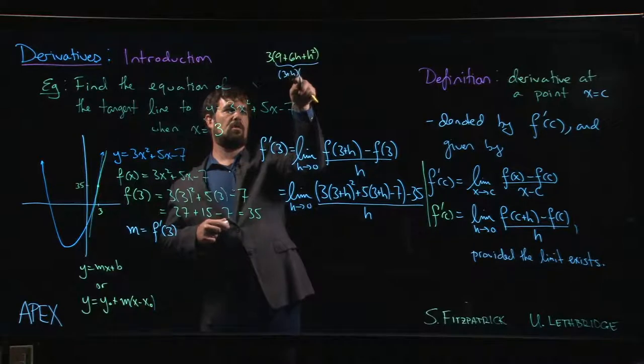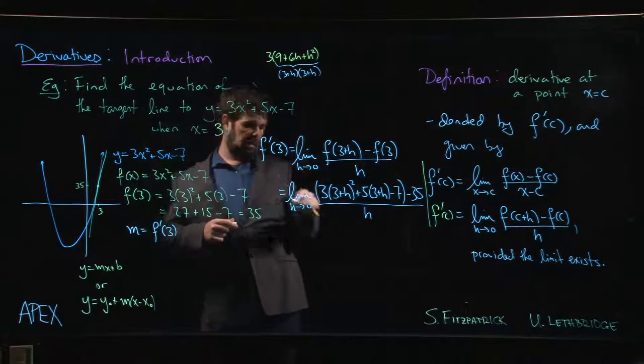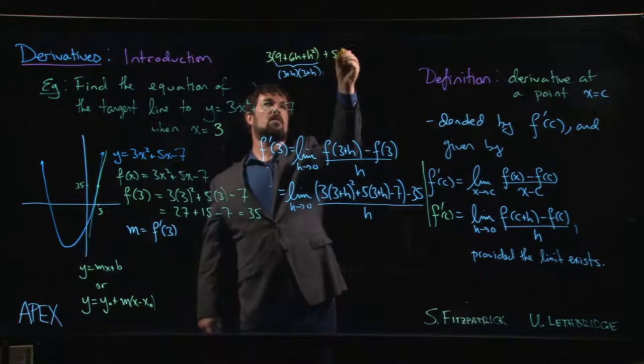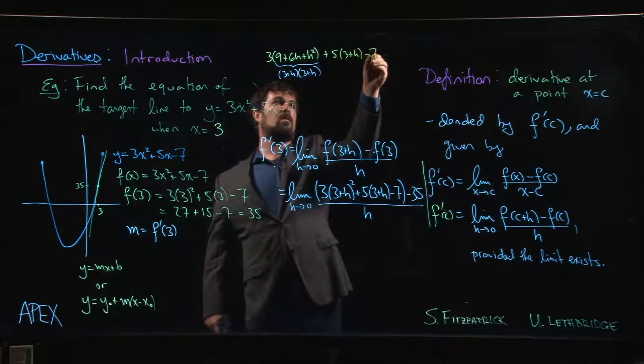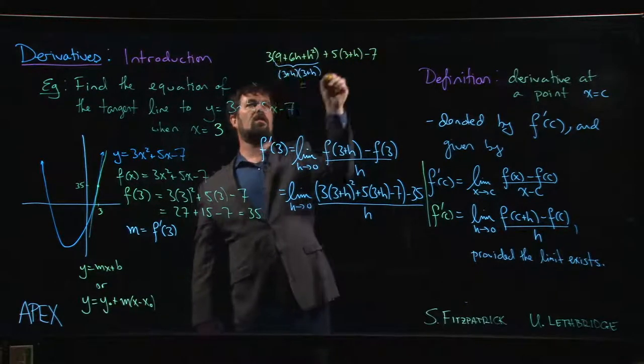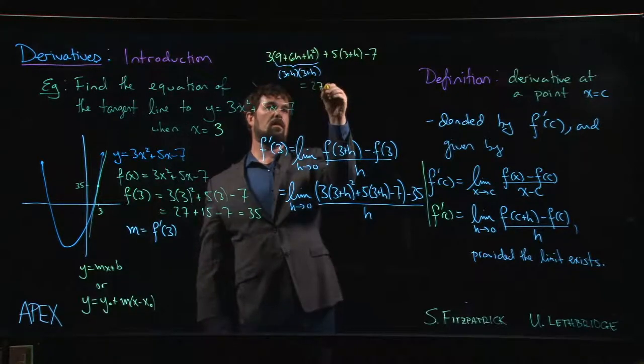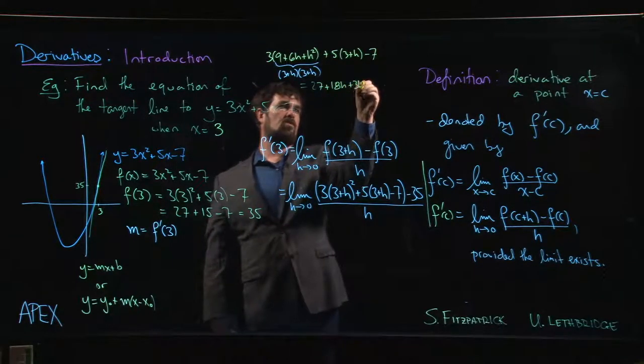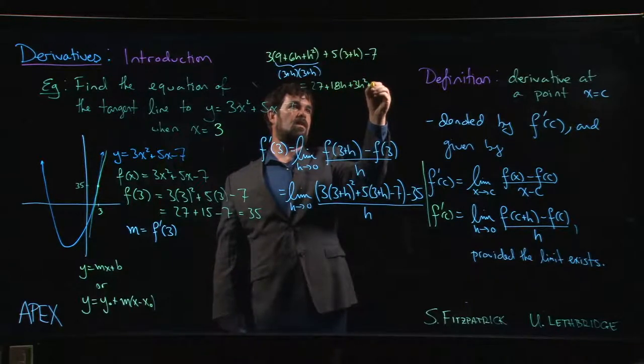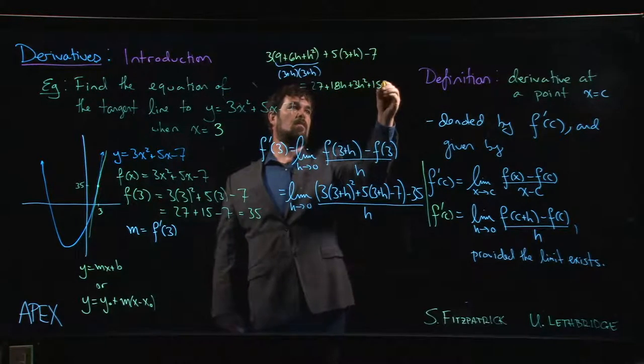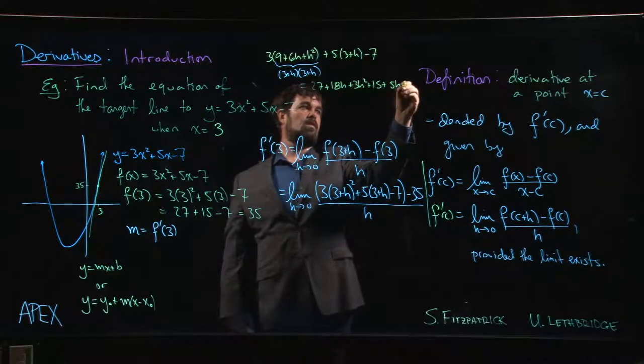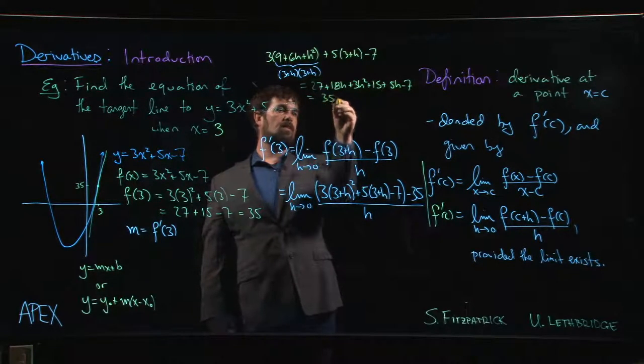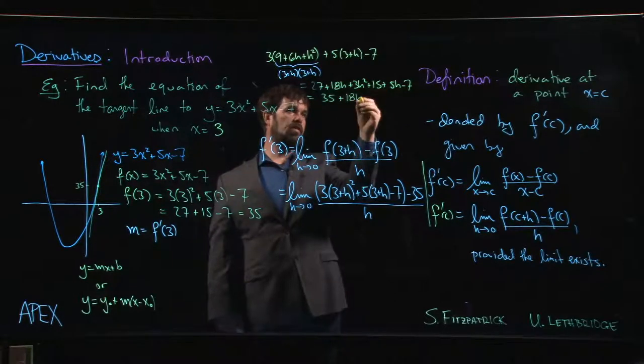Okay, 5 times (3 plus h) minus 7, and we clear the brackets. So 3 times 9 is 27, 3 times 6 is 18h, plus 3h squared. 5 times 3 is 15, plus 5h, minus 7. So we get 35 plus 18h, oh plus 5h.